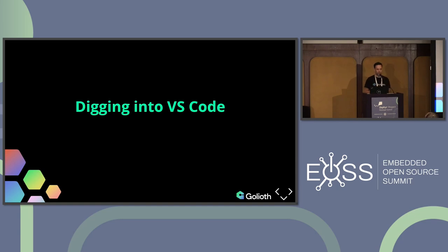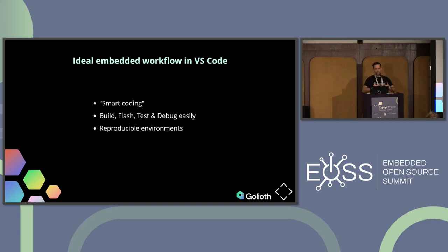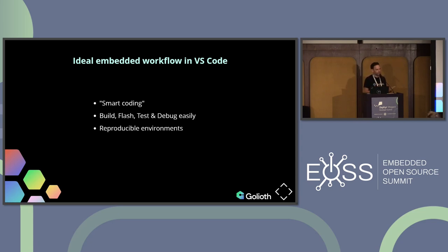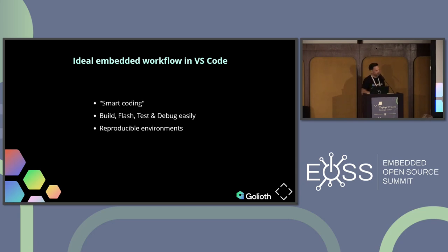When I say VS Code supports embedded, I usually call out three things. One is smart coding — IntelliSense and refactoring — I want that to work with my Zephyr application and the kernel without the dreaded squiggly lines saying 'cannot find the file' or 'cannot find the reference.' Two is the embedded development lifecycle: build, flash, test, debug — all easily without jumping through a bunch of terminals and hoops. And the last one, which may not be obvious, is reproducible environments — your embedded toolchain, paths, virtual environments, and compilers need to be reproducible for you, your teammates, and your clients.